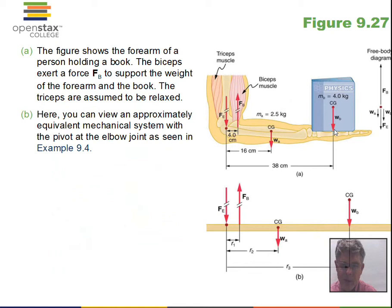The force of the bicep muscle times its lever arm, that would be a counterclockwise torque, and we might call that positive. And then there would be a negative torque, a clockwise torque for the center of gravity of the forearm, and another negative torque for the book.